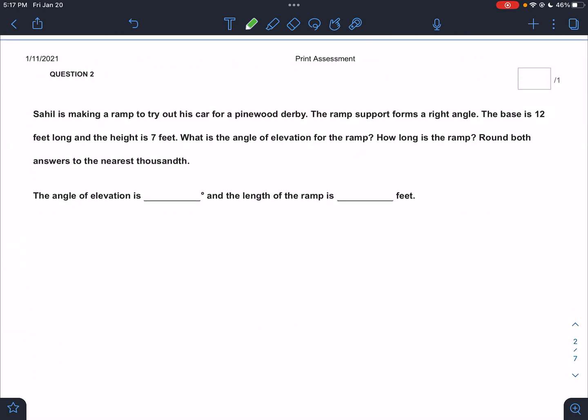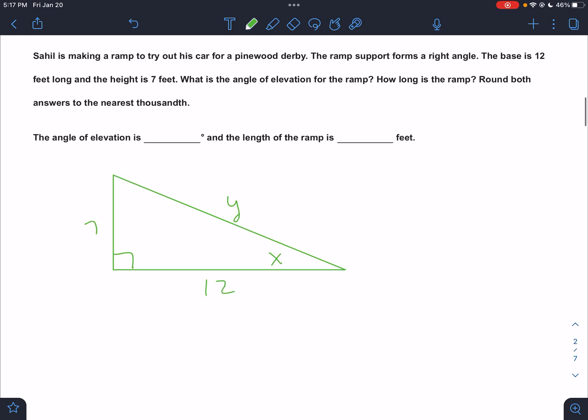Sahil is making a ramp to try out his car for a Pinewood Derby. The ramp support forms a right angle. The base is 12 feet long. The height is 7 feet long. What is the angle of elevation and how long is the ramp? So those are the parts we're looking for. Round both to the nearest thousandths.